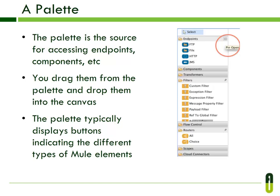The second component is the palette. The palette is the source for accessing endpoints, components, transformers, and cloud connectors. You drag them from the palette and drop them into the canvas in order to create flows. The palette typically displays buttons indicating the different types of Mule elements. You can view the content of each button by clicking on it, and click again to hide the content.